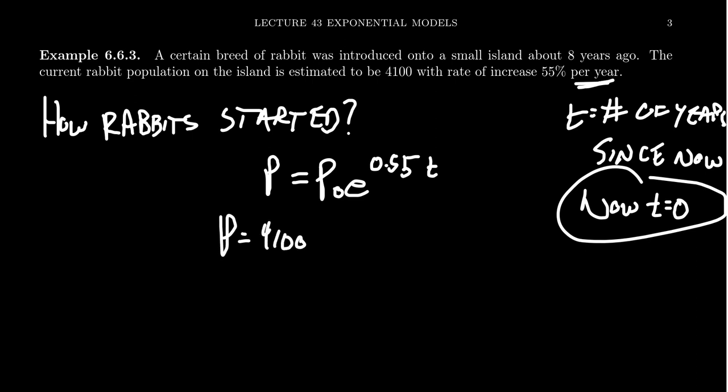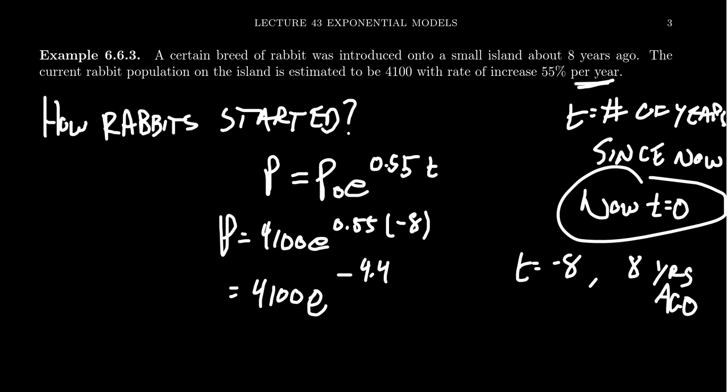Therefore our initial population is going to be 4100, so we have 4100e^(0.55t). But if we want to figure out how many bunnies there were at the beginning of this experiment, we need to go back in time and set t equal to negative eight. So t equals negative eight would be eight years ago, for which we try to compute this. We're going to take 0.55 times eight, that's going to give us e to the negative 4.4.